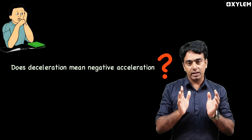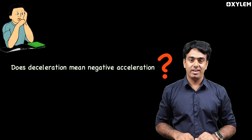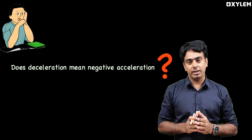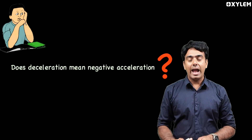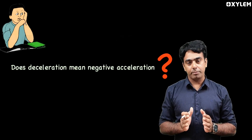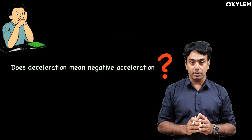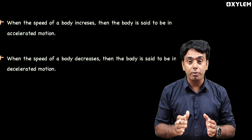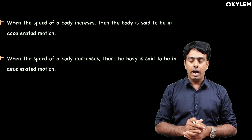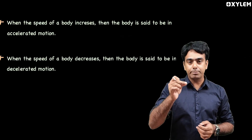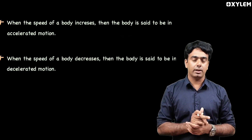Deceleration is said to be negative acceleration. What is actually acceleration and deceleration, and how do they differ? Accelerated motion: when the speed of a body increases, then the body is said to be in accelerated motion. When the speed of a body decreases, then it is called decelerated motion.